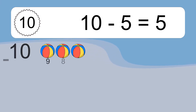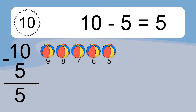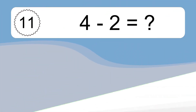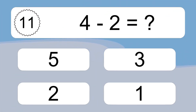10 minus 5 equals what? 10 minus 5 equals 5. Let's count it: 9, 8, 7, 6, 5.